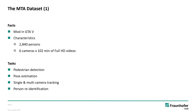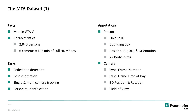For example, you can do pedestrian detection, pose estimation, single and multi-camera tracking, and person re-identification on the dataset. We recorded for every person a unique ID, a bounding box, its position in 2D and 3D, body orientation, as well as 22 body joints.